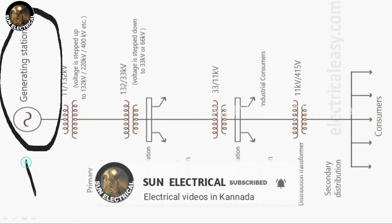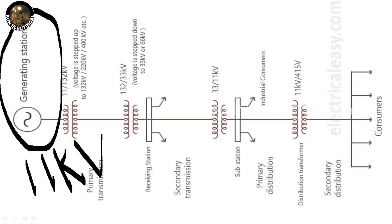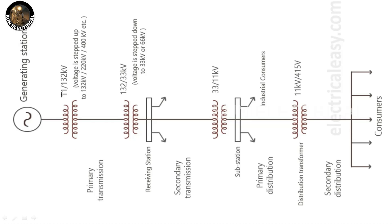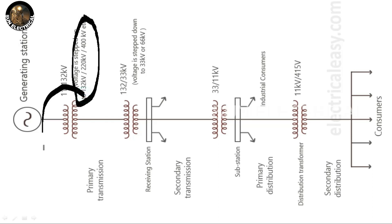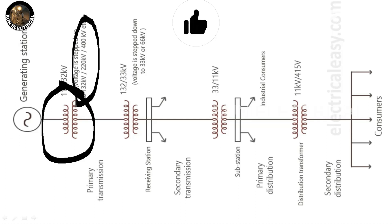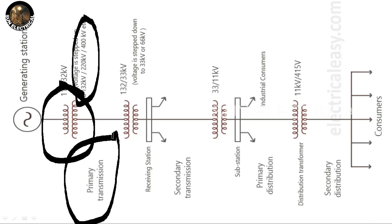The power generating station produces 11kV power supply. That power is then converted to 110kV or 220kV using a step-up transformer. The step-up transformer is used at the primary substation — 110kV, 132kV, 220kV, or 400kV.